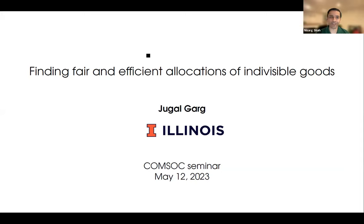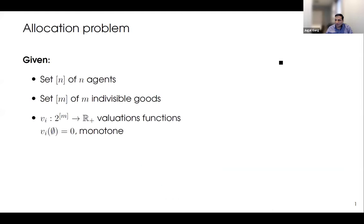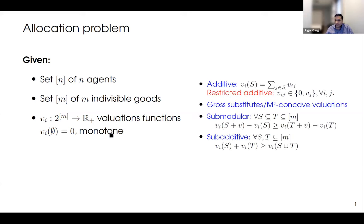Now we are at our second talk by Jugal Garg, who will tell us about his recent work on finding fair and efficient allocations of indivisible goods. We consider the following allocation problem: we have a set N of n agents and a set M of indivisible goods. Each good must be given to exactly one agent — we cannot fractionally divide them. Agents have valuation functions; v_i is the valuation function of agent i, a set function. We assume standard assumptions: empty bundle has valuation 0 (normalized) and they are monotone.